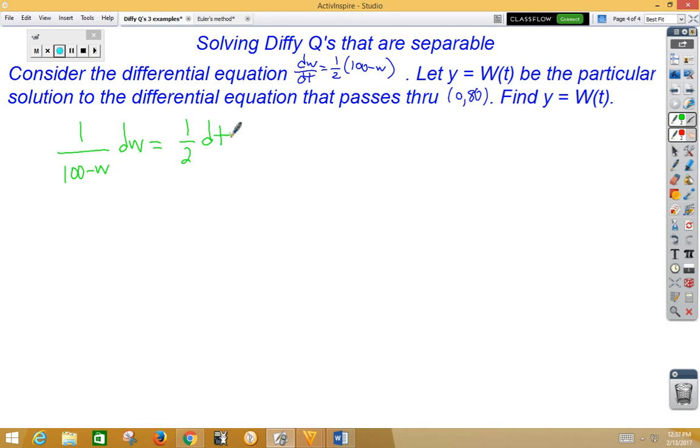Now that we're separated, we can go ahead and integrate. Now on the left side, that's u-sub. If u is 100-w, then du is negative dw. If I want to put a negative with the dw, I need to put a negative out front.